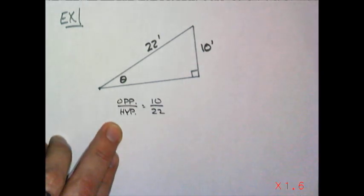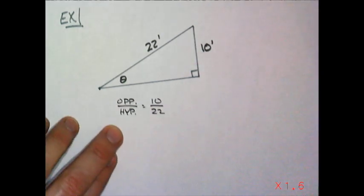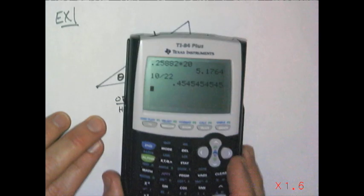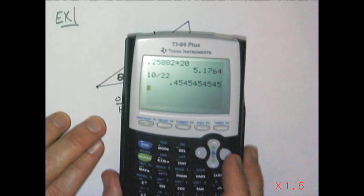And I want to know what angle has that. So what I could do is I take, I divide 10, divide it by 22, and this gives me 0.454545. You see that?